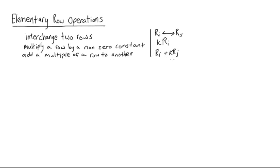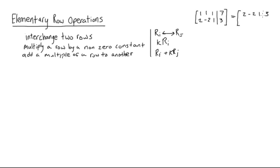To show what I mean, say we had a matrix that looks like: row one is [1, 1, 1, 7] and row two is [2, -2, 1, 3]. According to the first rule we can interchange these two rows and the matrix or the system will be exactly the same, giving us [2, -2, 1, 3] on top and [1, 1, 1, 7] on the bottom.